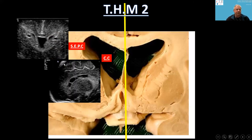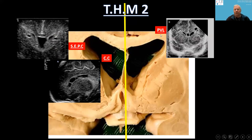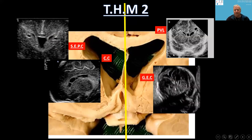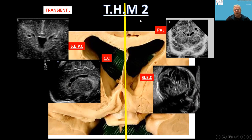The conatal or intraventricular anterior frontal cysts appear like grapes inside the ventricle. The periventricular leukomalacia cysts appear above the ventricles. The ganglionic eminence cysts appear in the lower lateral ventricular wall region. Sub-ependymal pseudocysts and conatal cysts are transient and in my experience always disappear without any sequela. GE cysts and PVL cysts always had a bad prognosis. Thank you for listening.